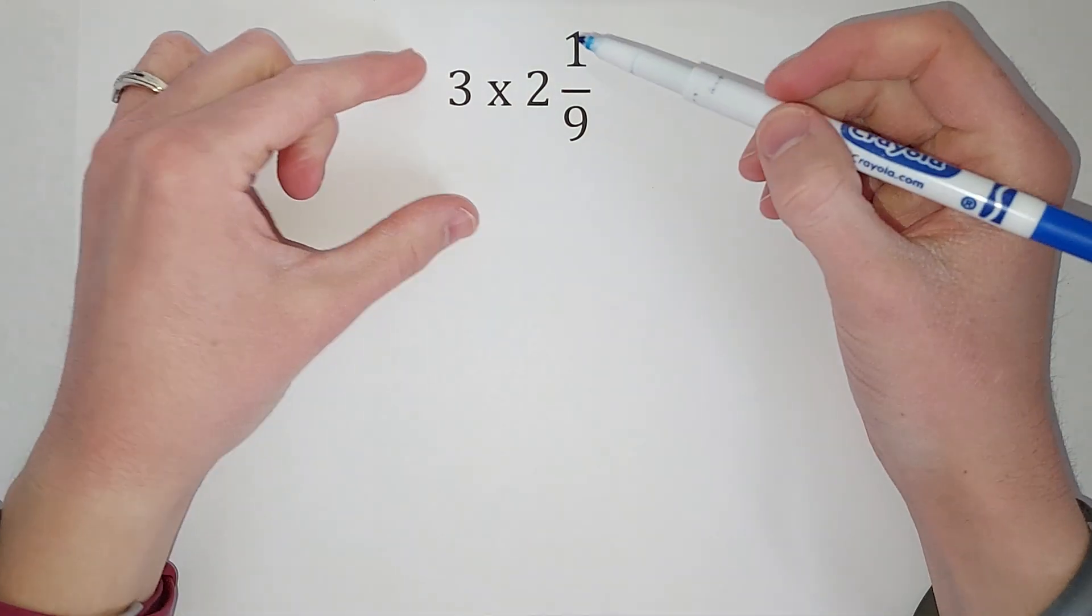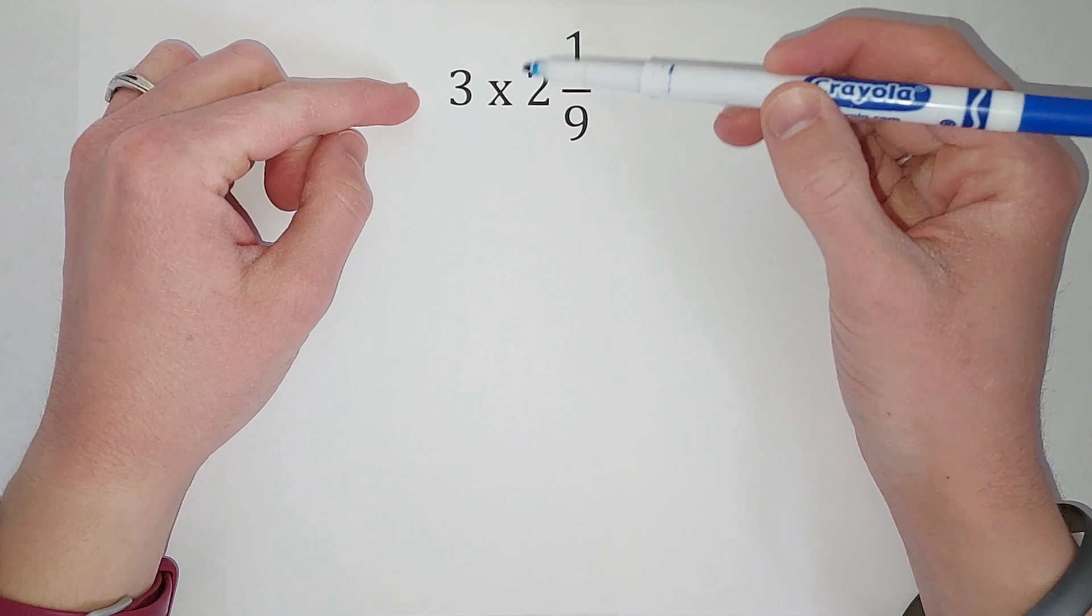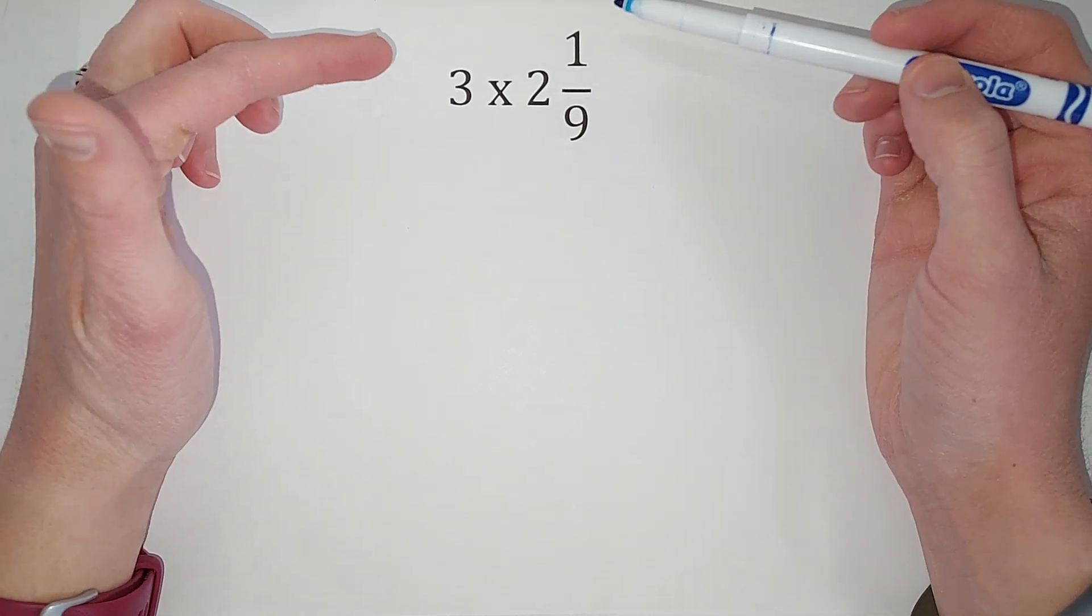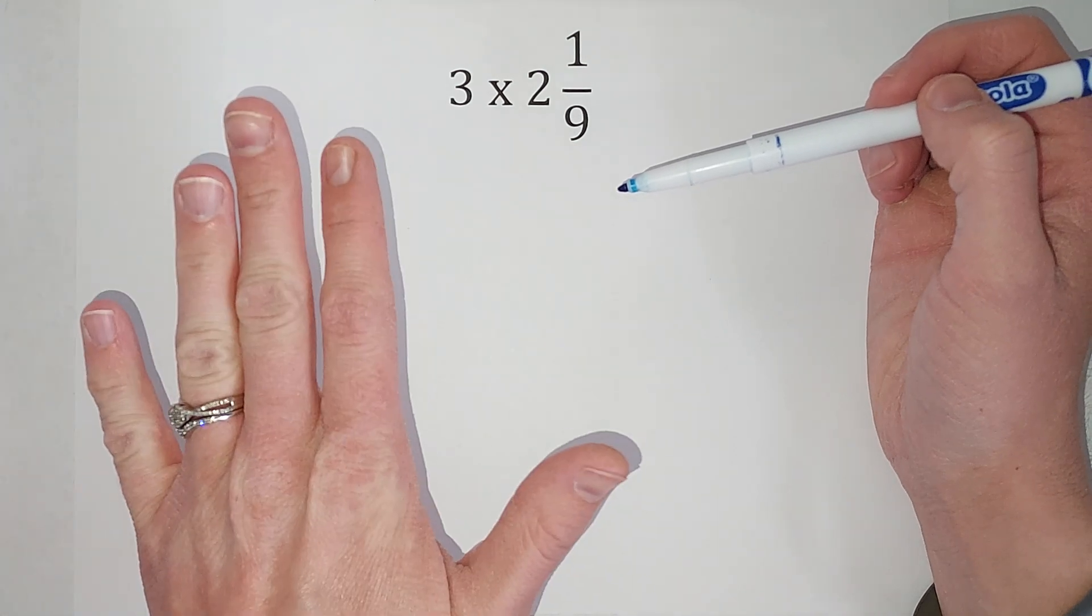So actually before I multiply these, I'm going to turn my mixed number into an improper fraction. An improper fraction is when the top is bigger than the bottom. Apparently it's very improper.